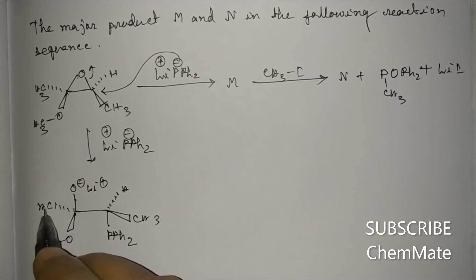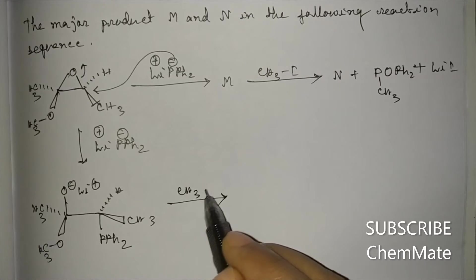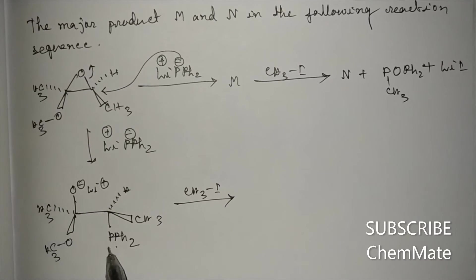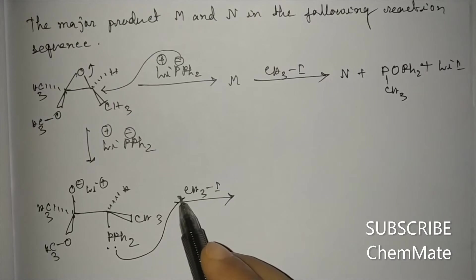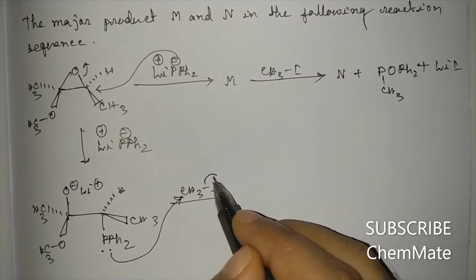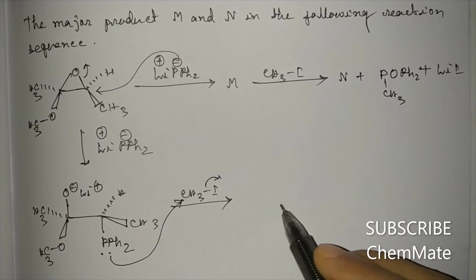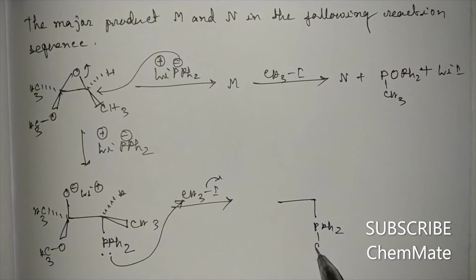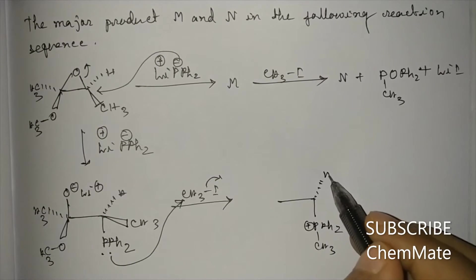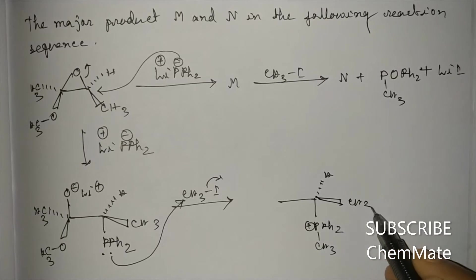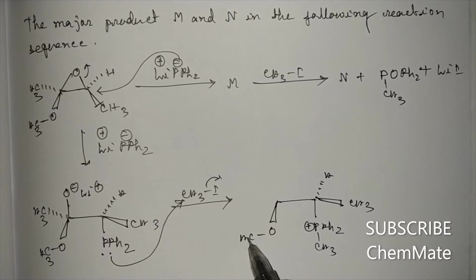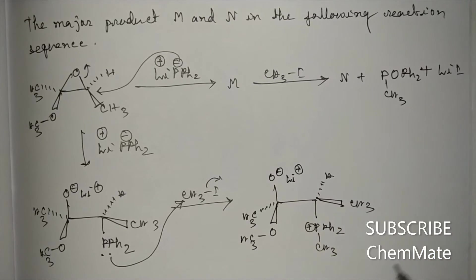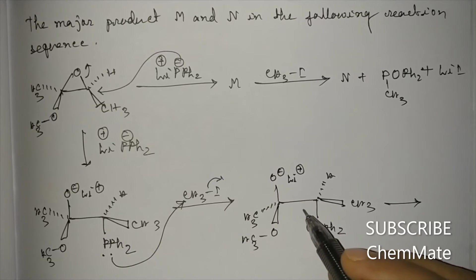After ring opening, PPh2 is in-plane, hydrogen below the plane, CH3 above the plane, and O-minus Li+ above the plane. Treatment with CH3I causes the lone pair on oxygen to attack the methyl, iodine leaves, giving a phosphonium salt intermediate.